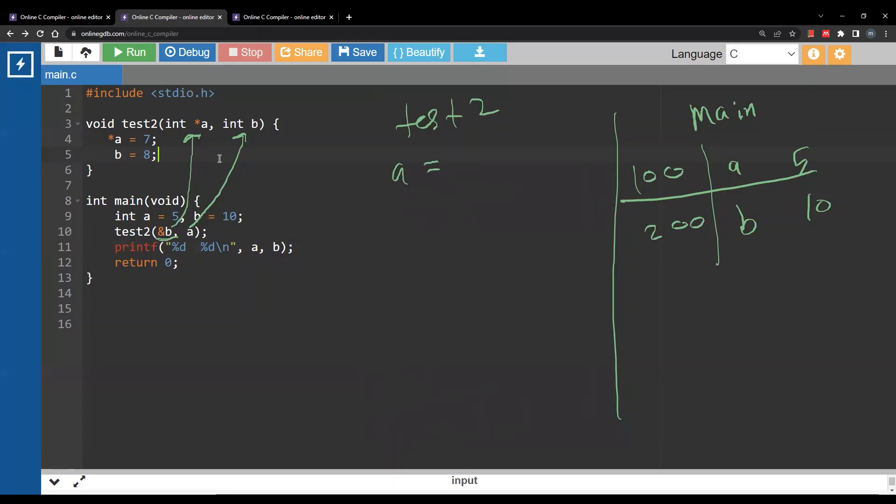What is the value of a inside test2? It is the address of b which is 200. What is the value of b inside test2? Which is the value of a inside main. So b is going to take this 5. Okay notice the parameter passing here. The first parameter will take the address, second parameter will take the value.